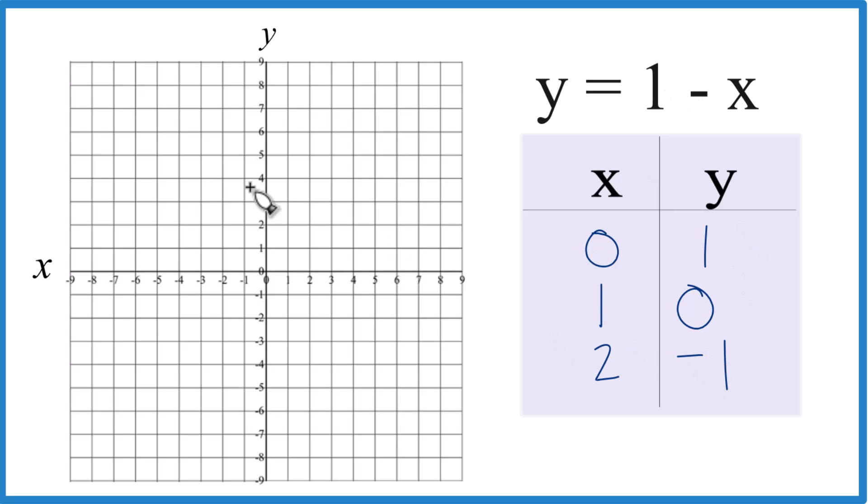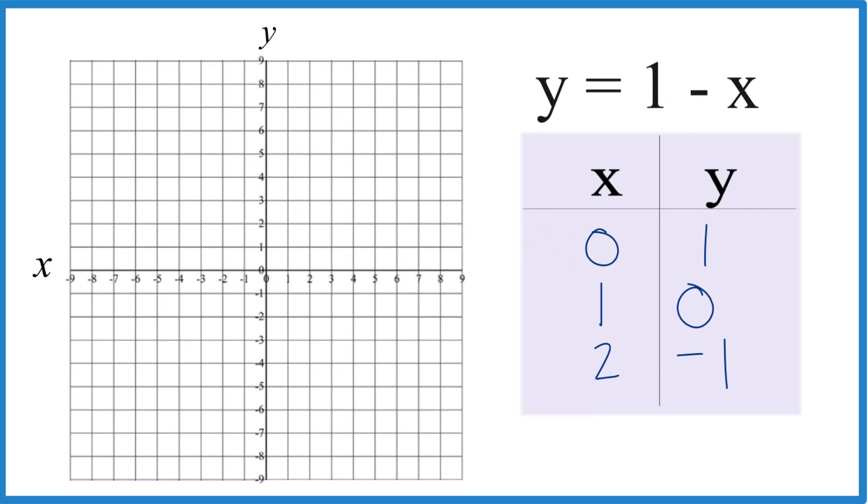So these are the points we're going to graph. You can choose anything, but this is going to fit on our graph, so that's kind of nice. So we go to x is zero, y is one. That's our first point. X is one, y is zero. And then x is two, y is negative one. And you see, they all line up there.